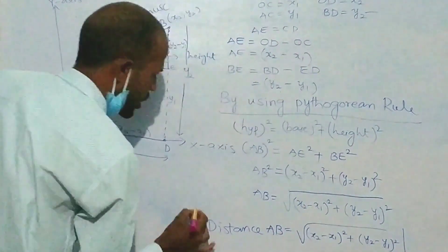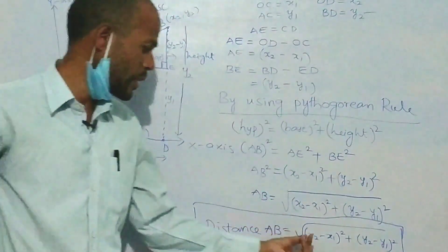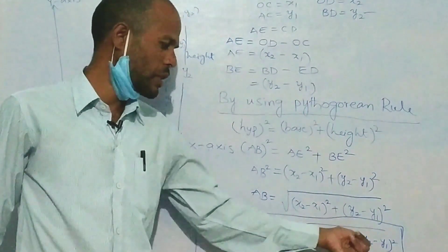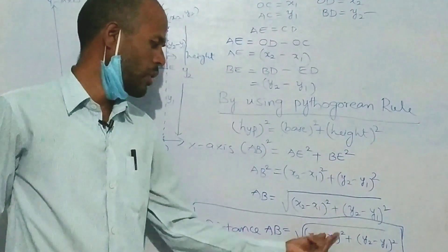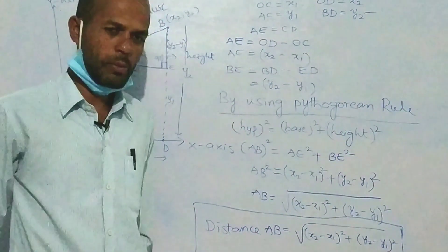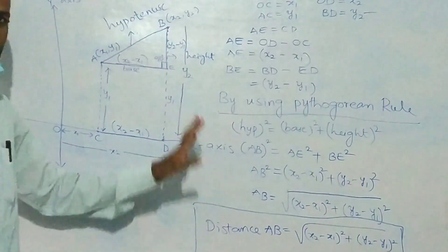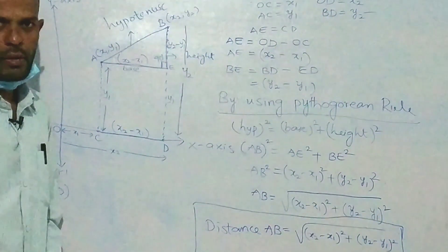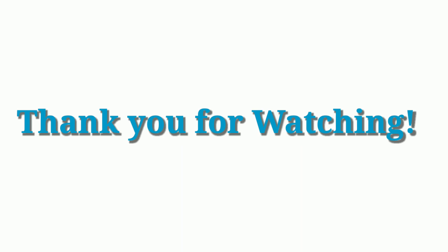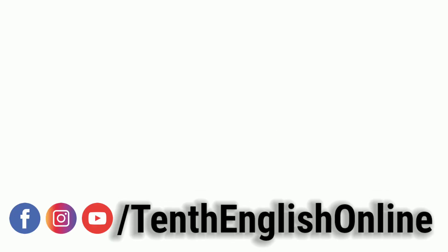The distance formula is: AB equals the square root of (x2 − x1)² + (y2 − y1)². This is the derivation of the distance between two points formula. We can also write it as the square root of (x1 − x2)² + (y1 − y2)², since squaring removes the negative sign. Thank you.